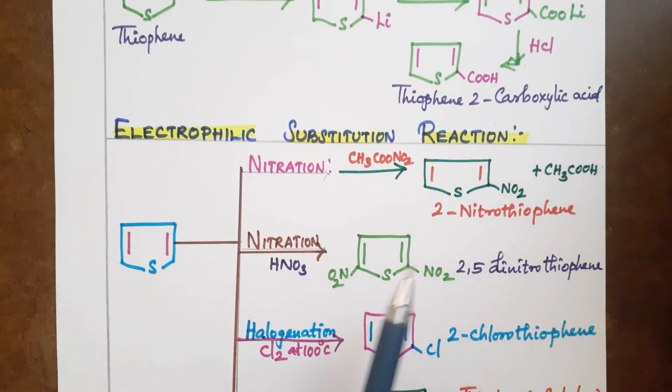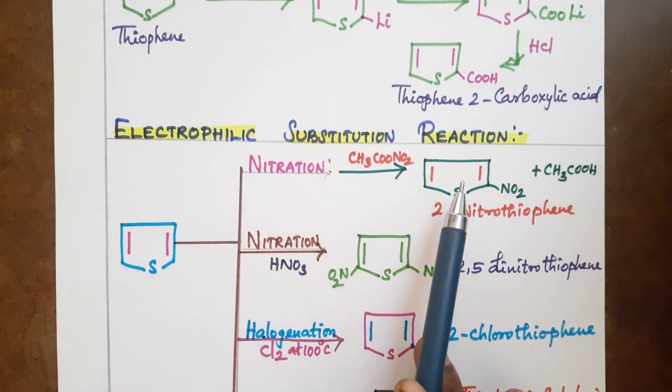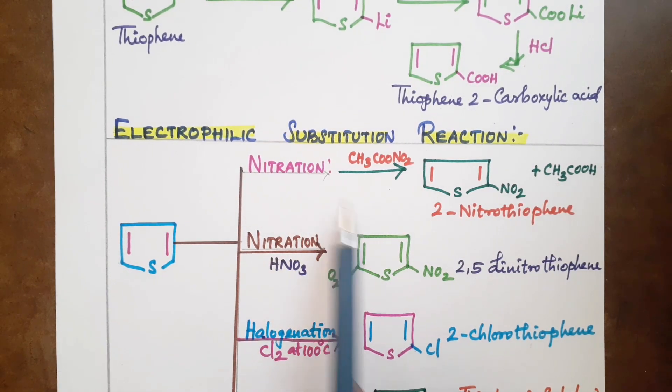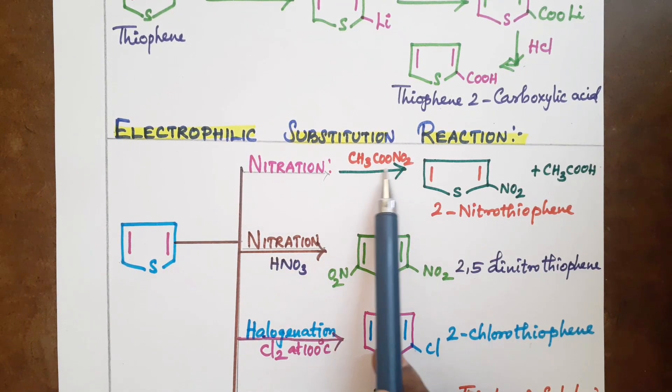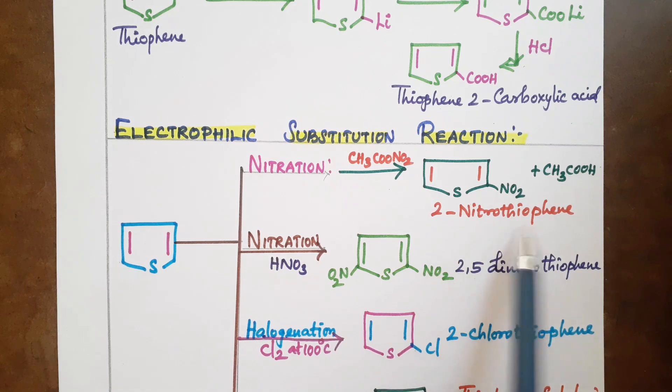If you have any questions about this one, we will see the main reactions: electrophilic substitution reactions. Nitration has two types. Thiophene undergoes nitration with acetyl nitrate to give 2-nitrothiophene.